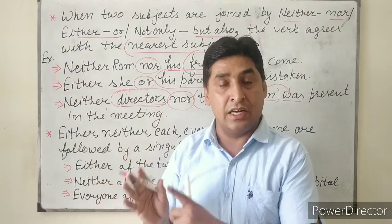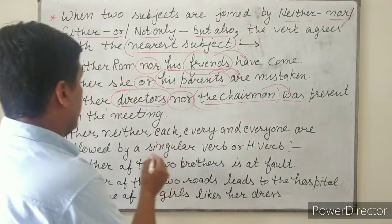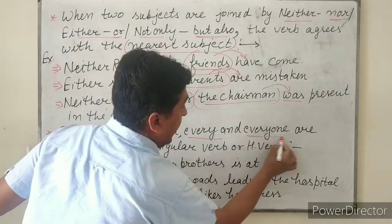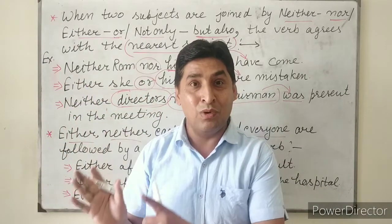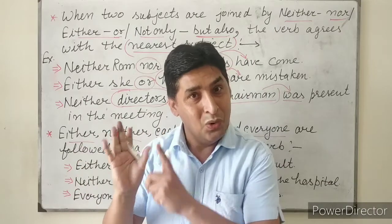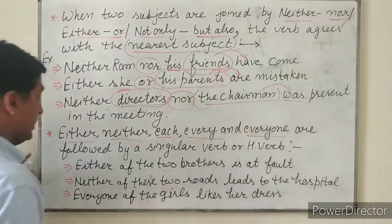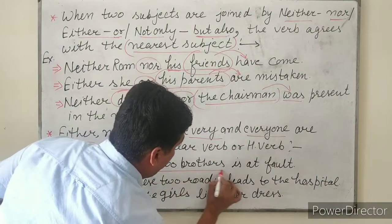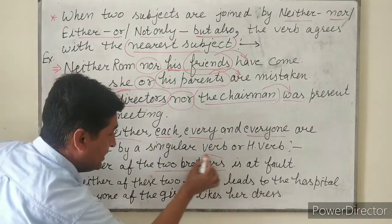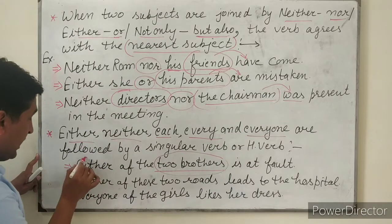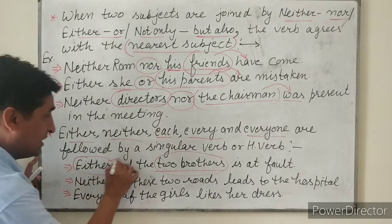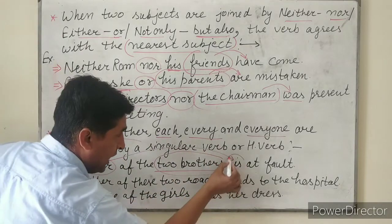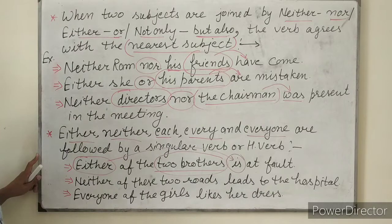Next rule: the words 'either,' 'neither,' 'each,' 'every,' and 'everyone' — इनके साथ हमेशा singular verb या helping verb का use होता है। For example: 'Either of two brothers' — यहाँ 'brothers' plural में है, लेकिन subject के रूप में 'either' use हुआ है, तो verb singular होगी — 'is.'